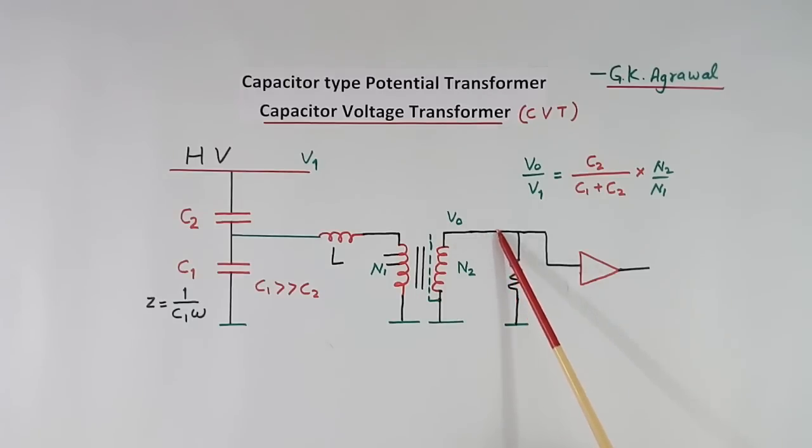Now this point will go to meter, or for control purpose it can be used. If it goes to meter, the meter is directly connected at this point. Or the second use is for control purpose.